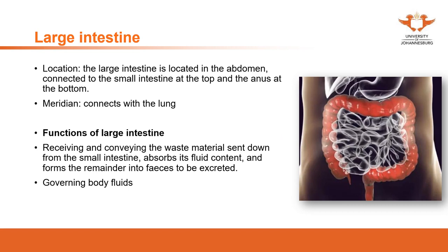The large intestine is located in the abdomen, connected to the small intestine at the top and the anus at the bottom. The large intestine meridian connects with the lung. The main function of the large intestine is receiving and conveying waste materials sent down from the small intestine - it absorbs fluid contents and forms the remainder into feces to be excreted.